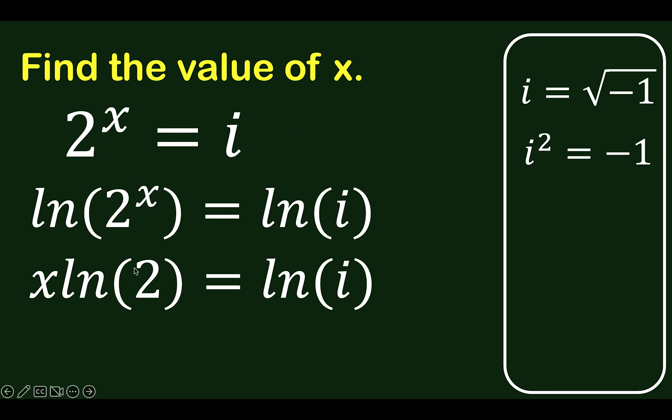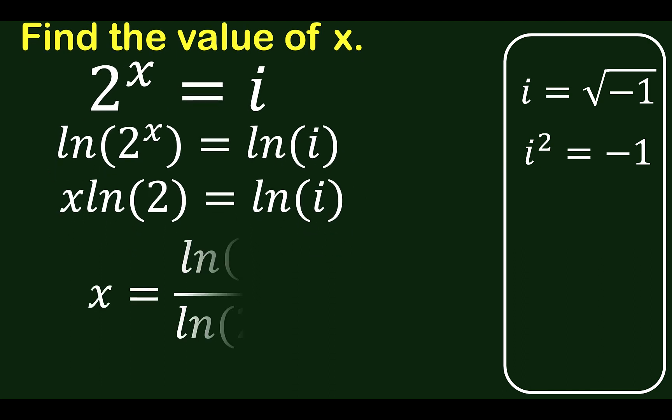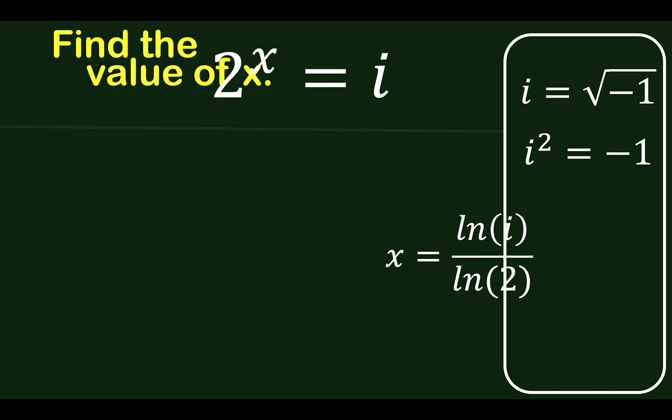Since we are solving for x, we can divide both sides of this equation by ln of 2. Because ln of 2 is not equal to 0, it's safe to divide. Now, our problem is we do not know the value of ln of i, so let's remember this result for a while.